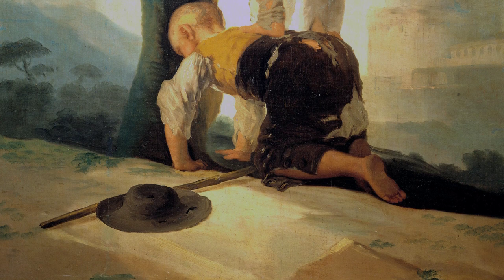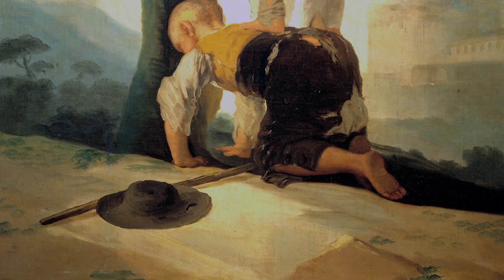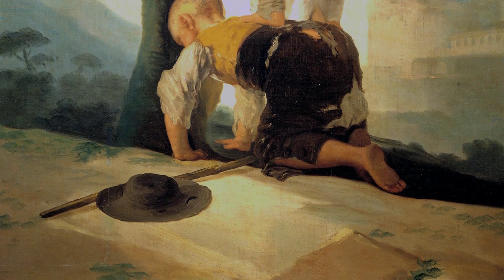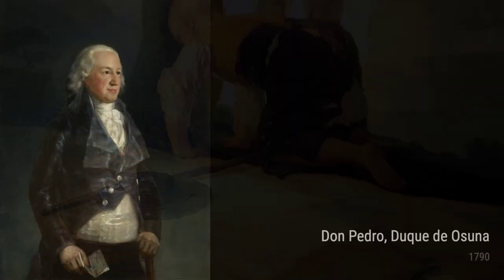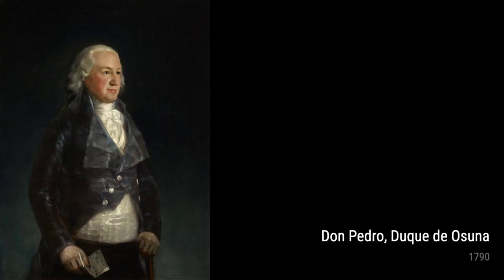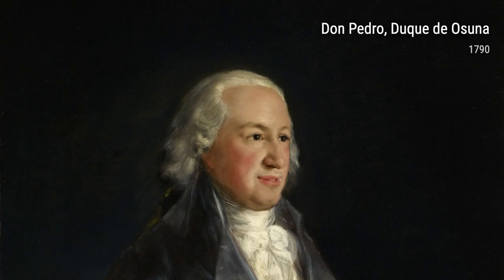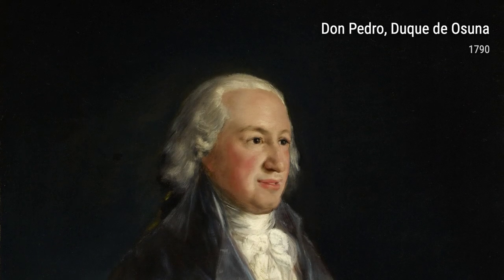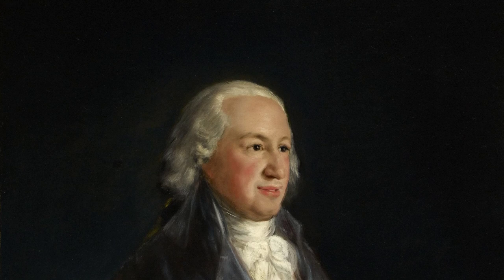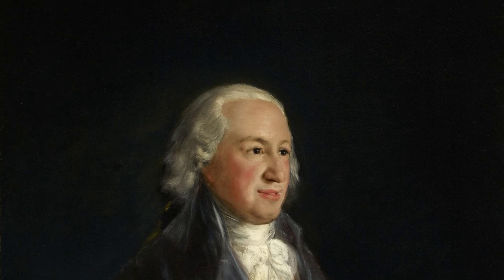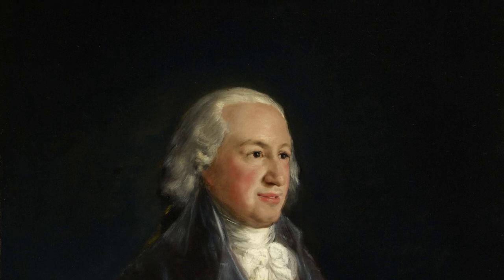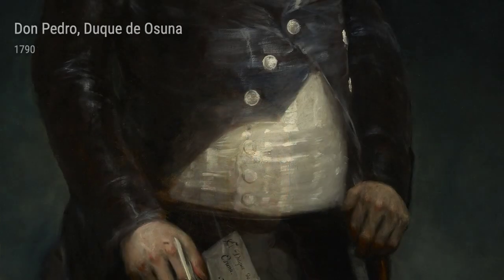In Poetry and Poets, completed between 1790 and 1800, Goya reveals his deep admiration for the world of literature and the power of artistic expression. This piece beautifully depicts the relationship between poets and their words, emphasizing the transformative nature of poetry.